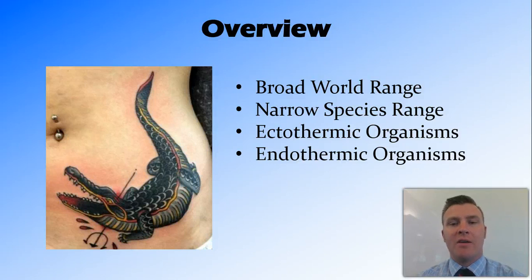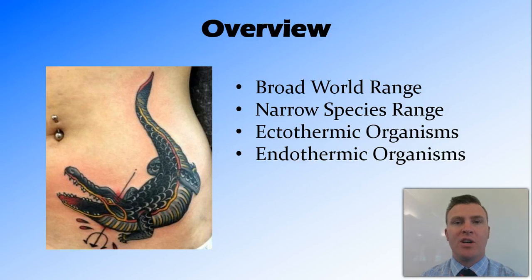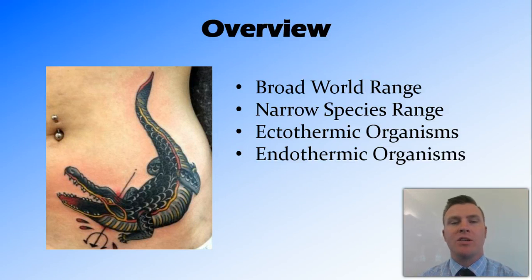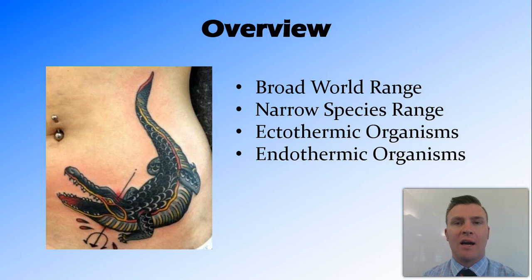In this video, we've looked at the broad world range from the Arctic through to hot springs, finding life across all those temperatures. However, individual species are only found in a small, narrow range of temperature, due to the activity of their enzymes changing outside of the ideal temperature. We talked about ectothermic, cold-blooded organisms, which absorb heat from the environment and are therefore at the mercy of it in both where they can live and how active they can be. And we looked at endothermic organisms, which produce their own heat and can therefore live in a larger range of temperatures, but have a much higher demand for food.